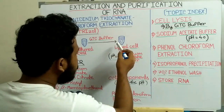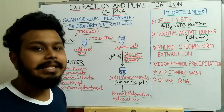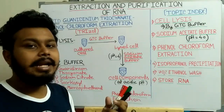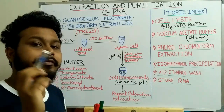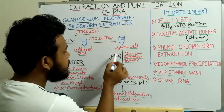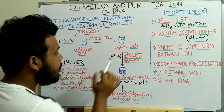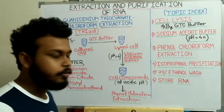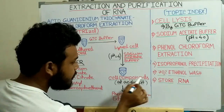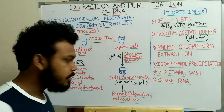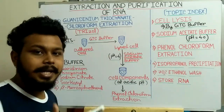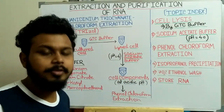We now have to maintain the pH at an acidic range, which is most important for separating RNA from DNA and protein during phenol-chloroform extraction. To maintain acidic pH and separate RNA molecules, we add sodium acetate buffer at a pH of around 4. We then perform phenol-chloroform extraction at this acidic pH.